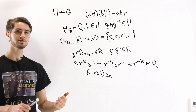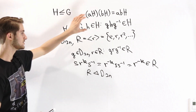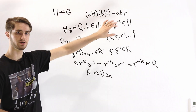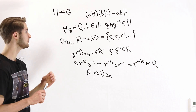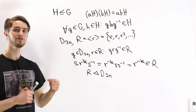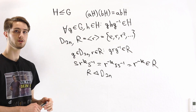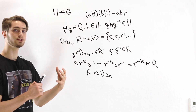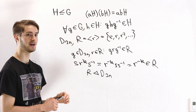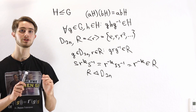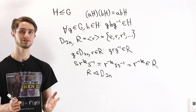So that is how we define a normal subgroup. We use the conjugation condition to check whether a subgroup is normal, and we know that if and only if the subgroup is normal, we are able to construct a quotient group out of the cosets of that subgroup such that multiplication is well defined.